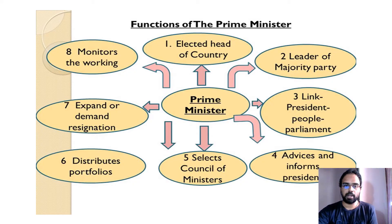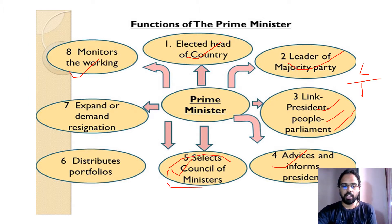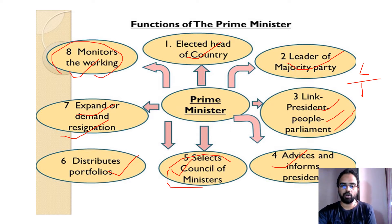The functions of the prime minister are categorized in many ways: he monitors and oversees all departments under him as the real executive head; he is the leader of the majority party; he acts as a link between the president, the people, and parliament; he advises and informs the president on all matters; he selects all ministers in his council and distributes portfolios to them; and he can demand anyone to resign from a ministerial post.